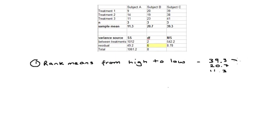The next few steps are to compare the highest mean, 39.3, with the lowest, 11.3. First, we're going to look up the Q value in this table.